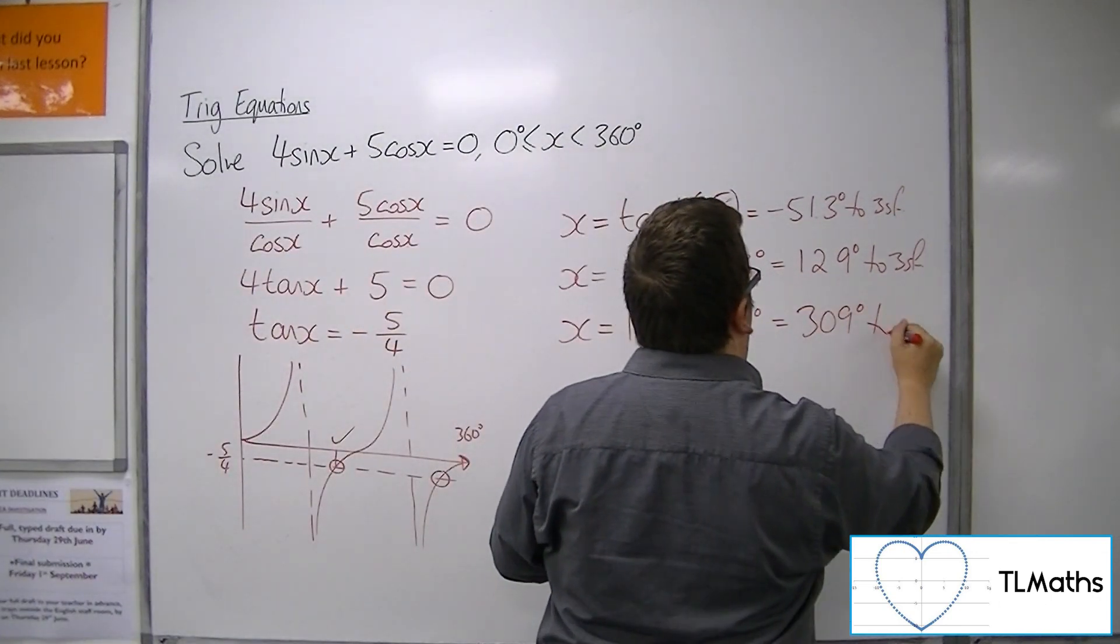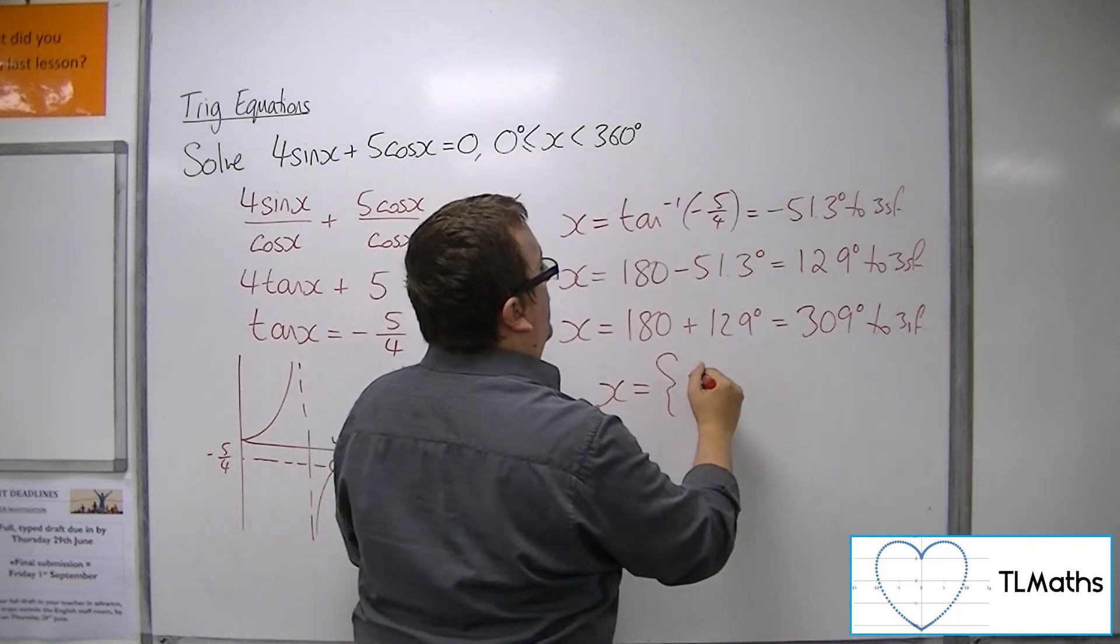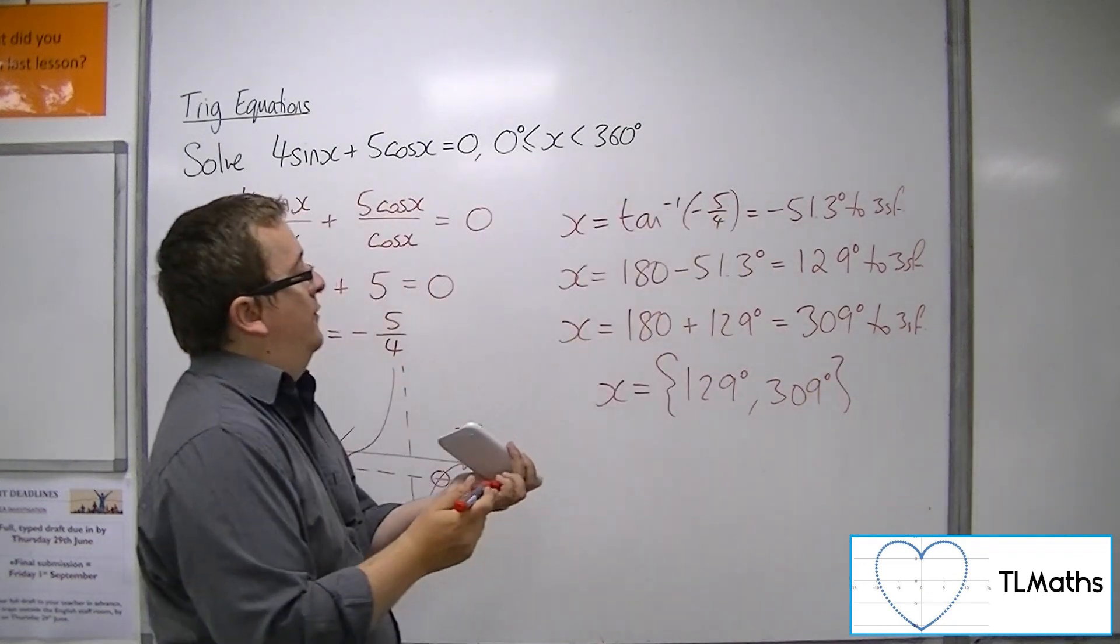And then we add on another 180 to get our second solution, which is 309 degrees to 3 sig fig. And so x must be 129 degrees or 309 degrees to 3 significant figures.